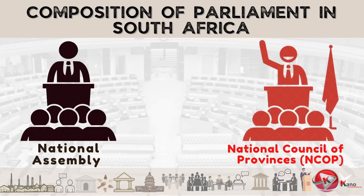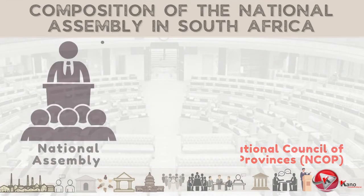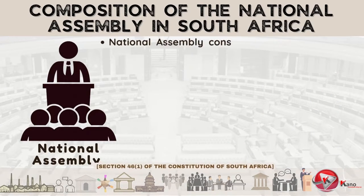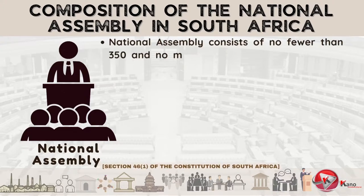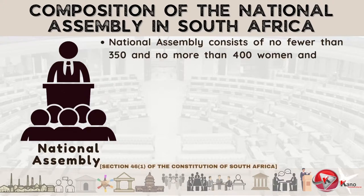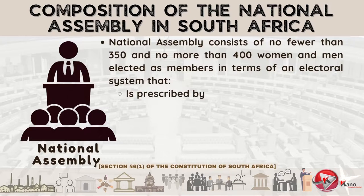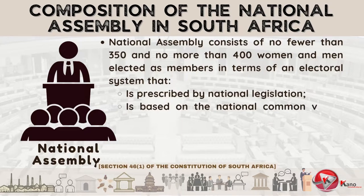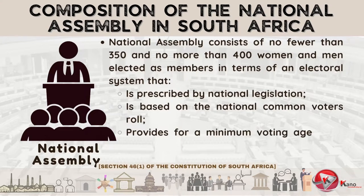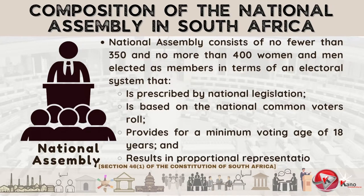These two Houses of Parliament are constituted in terms of the South African Constitution. The National Assembly consists of no fewer than 350 and no more than 400 women and men elected as members, in terms of an electoral system that is: (1) prescribed by national legislation; (2) based on the national common voter's roll; (3) provides for a minimum voting age of 18 years; and (4) results in proportional representation.